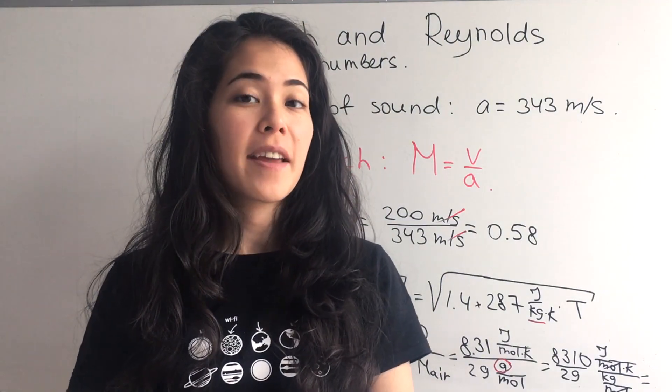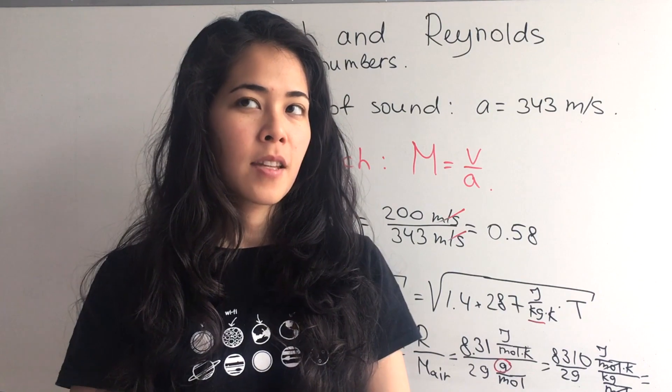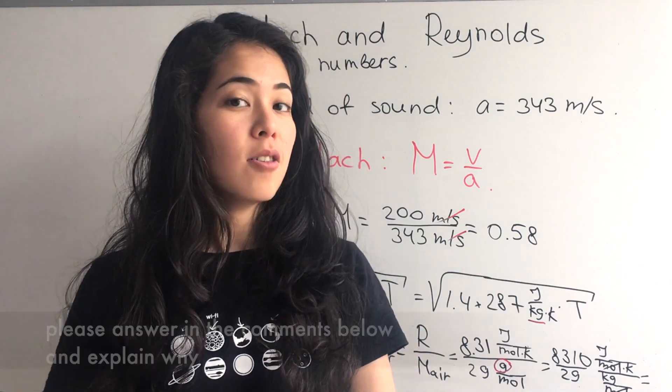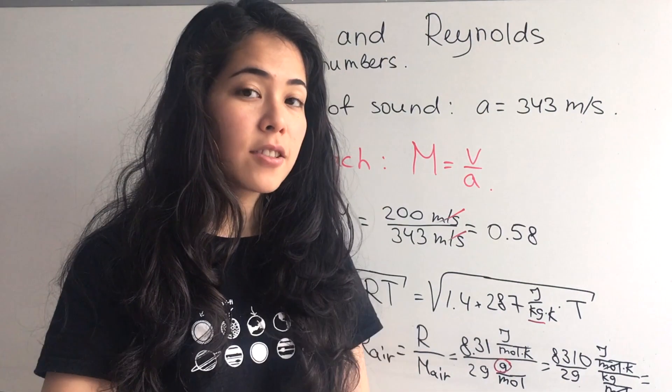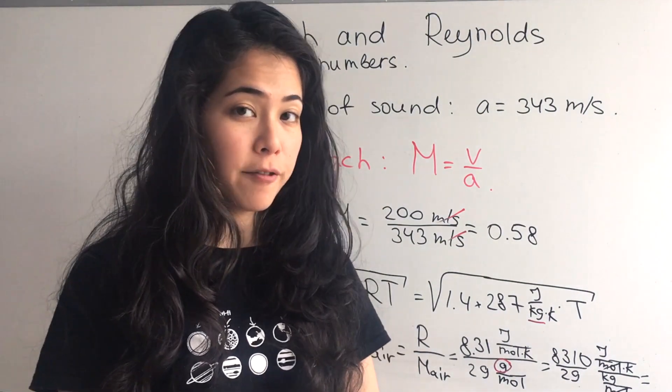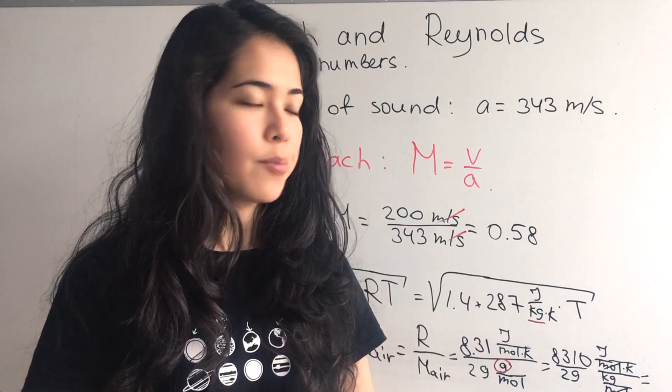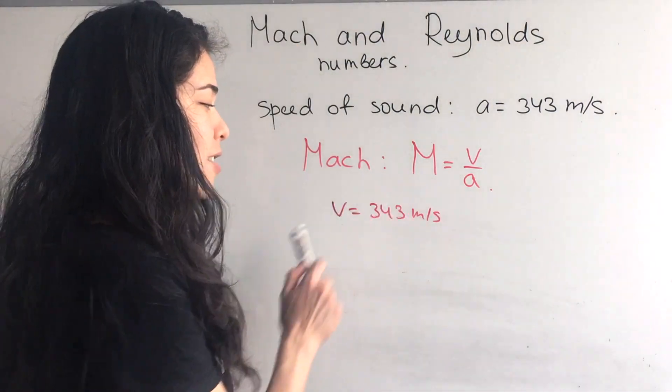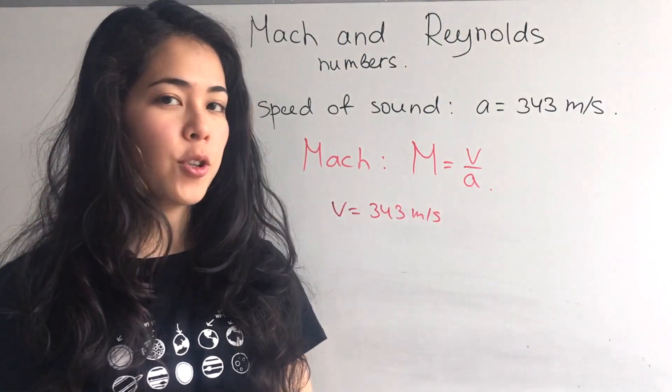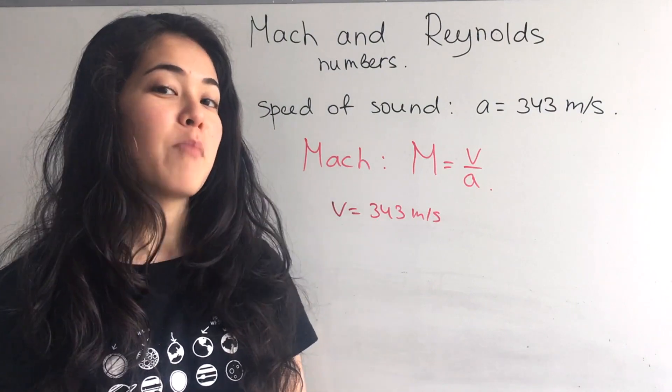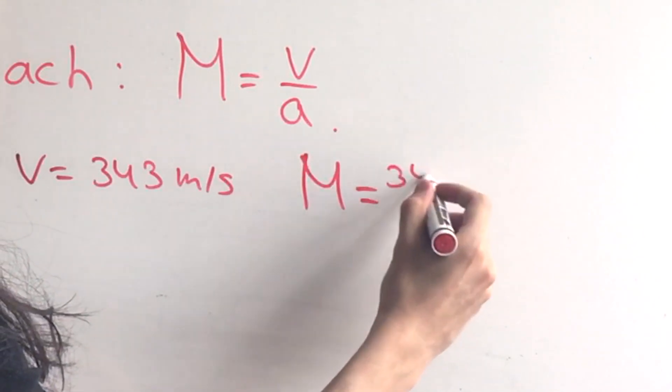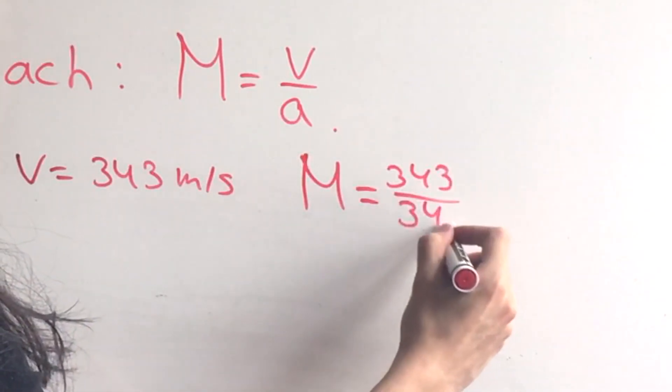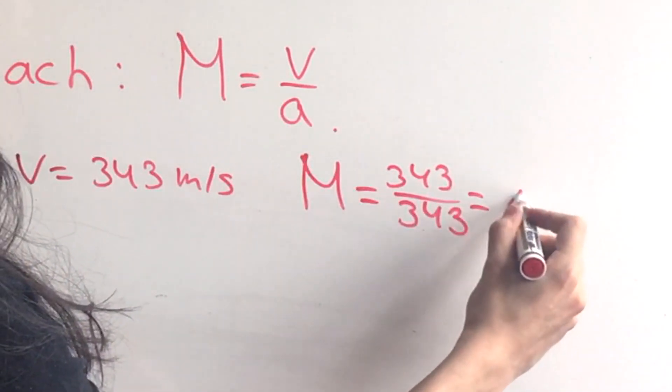Where do you think it would be easier to break the sound barrier on the first of March - in Colorado or in Texas? Now let's talk about different types of air flows depending on the Mach number. If we have the aircraft flying at 343 meters per second, the Mach number would be 1.